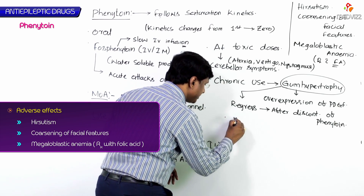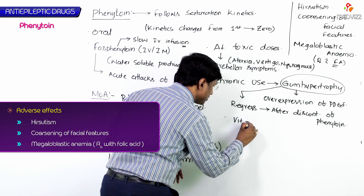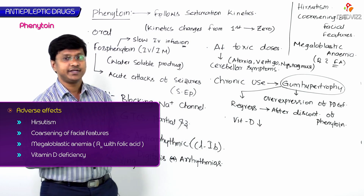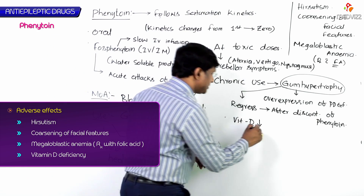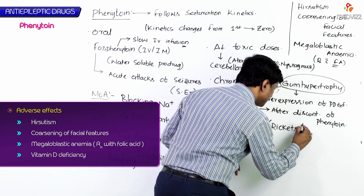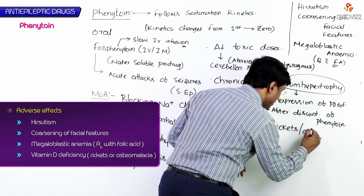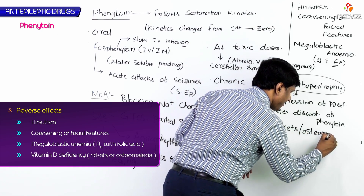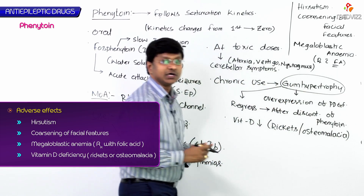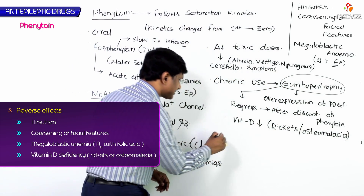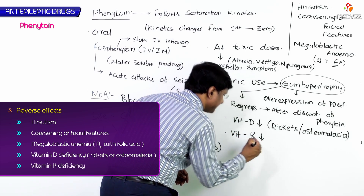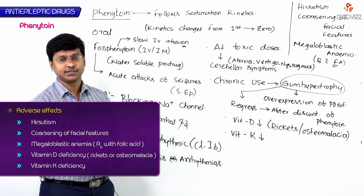Phenytoin causes vitamin D deficiency, which can lead to rickets or osteomalacia in the individual.